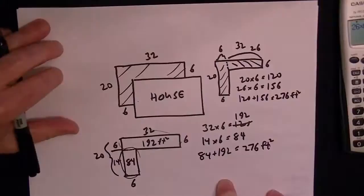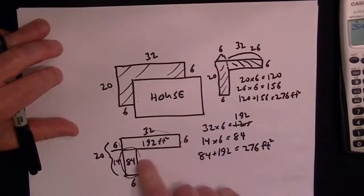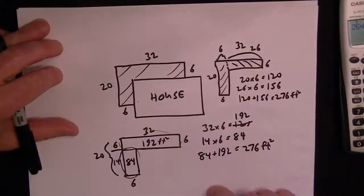So you can see that no matter how you break it up, you get 276 for the area, which of course makes sense because it's going to be the same area no matter how you count it.